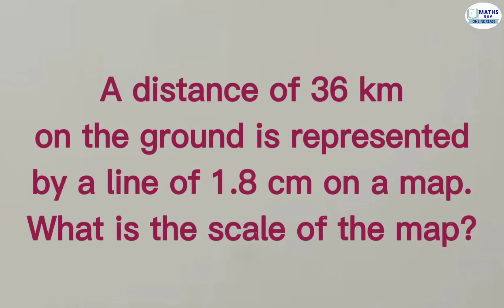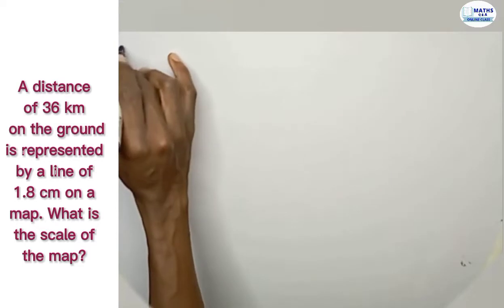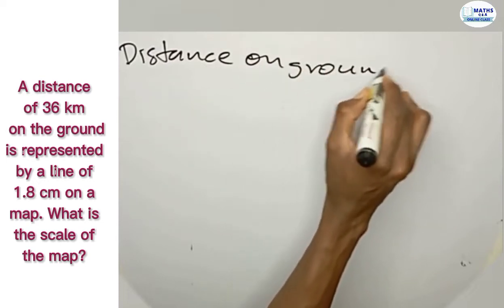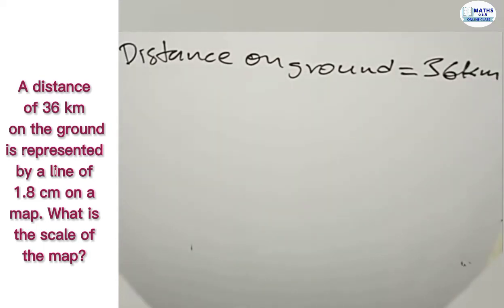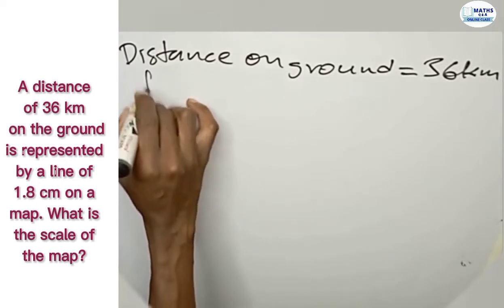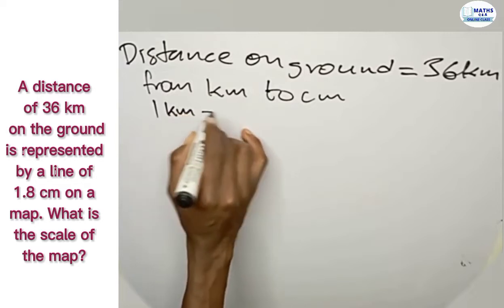A distance of 36 kilometers on the ground is represented by a line 1.8 centimeters on the map. What is the scale of the map? We've been given the distance on the ground, which is equal to 36 kilometers. Now let's convert from kilometers to centimeters — one kilometer is equal to